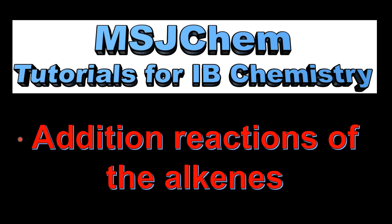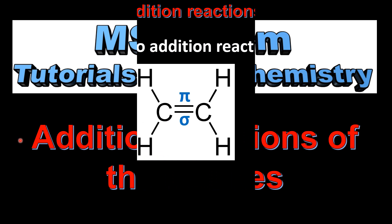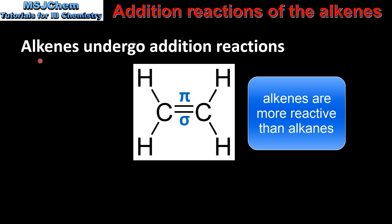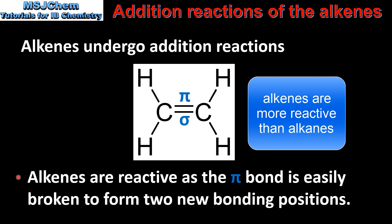This is MSJChem. In this video I'll be looking at the addition reactions of alkenes. Alkenes undergo addition reactions. The double bond in an alkene is composed of a sigma bond and a pi bond. Alkenes are reactive as the pi bond is easily broken to form two new bonding positions.